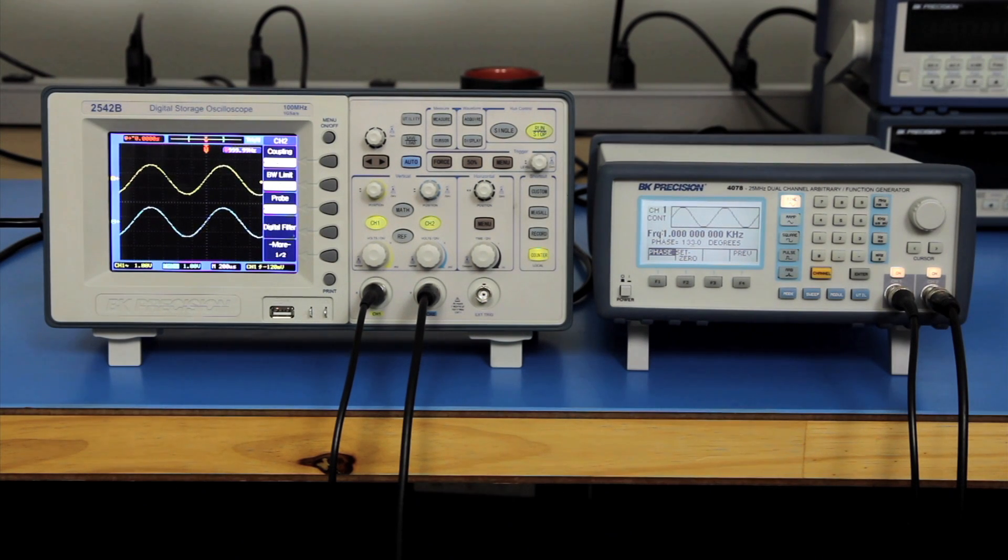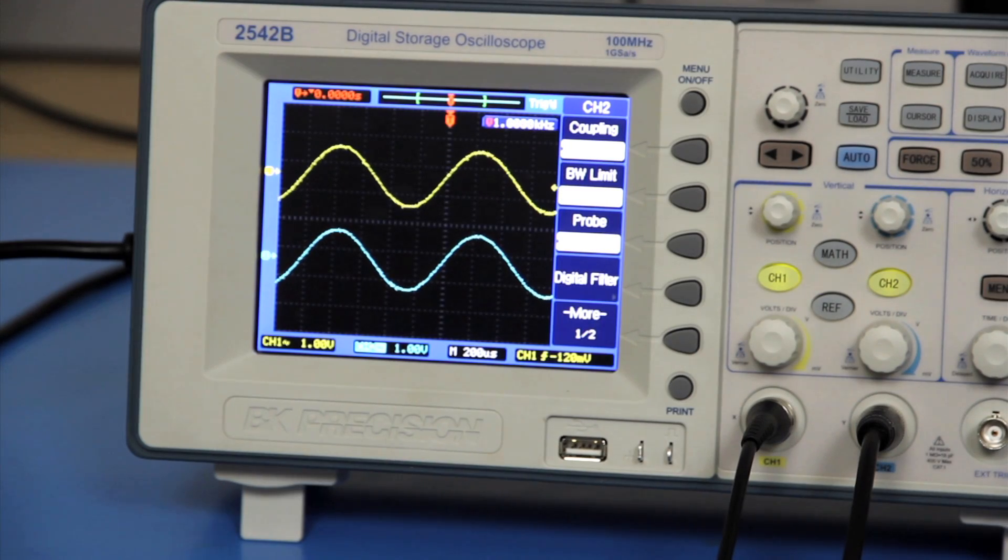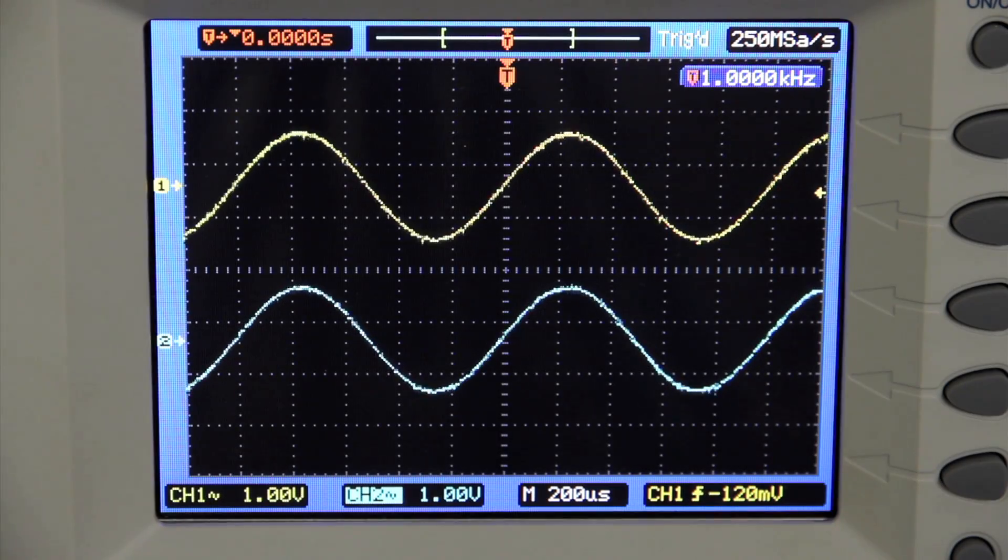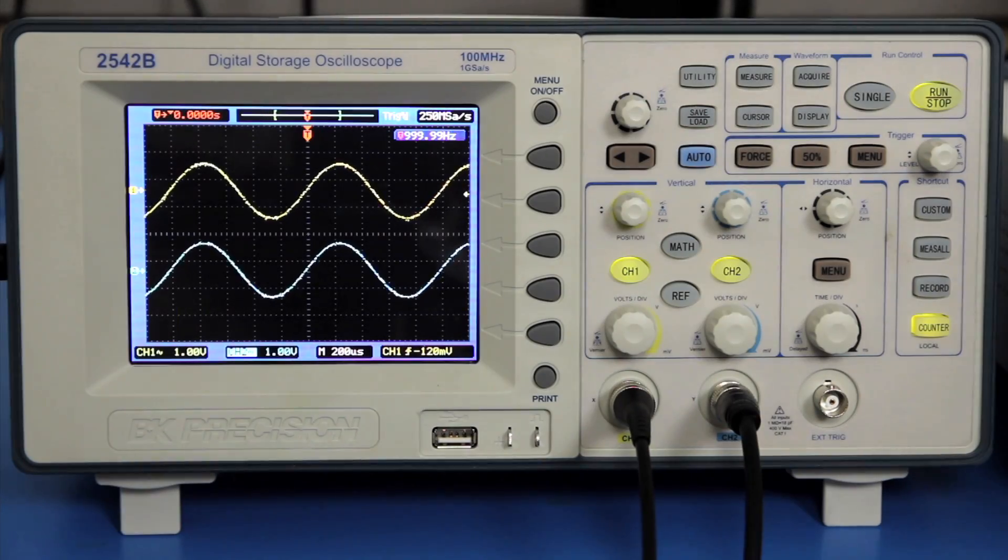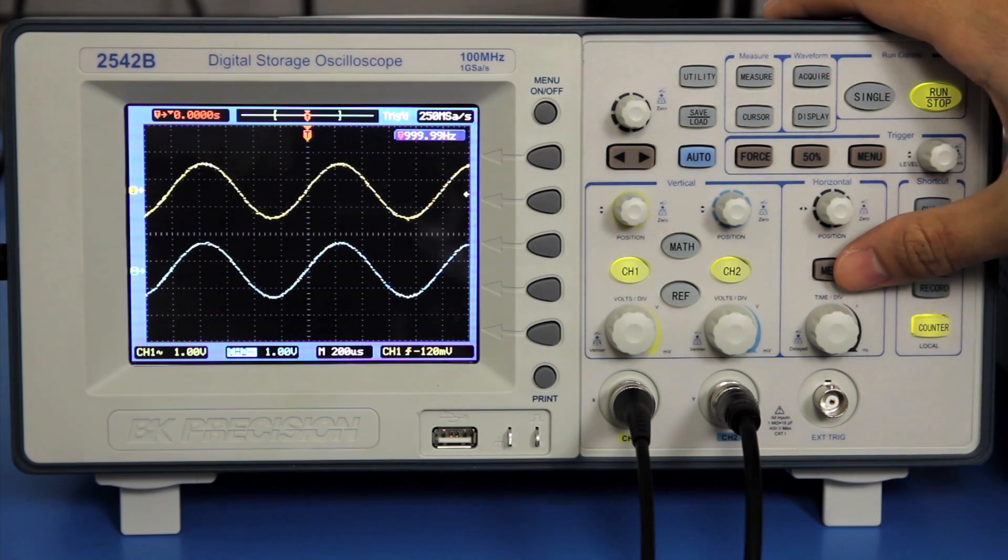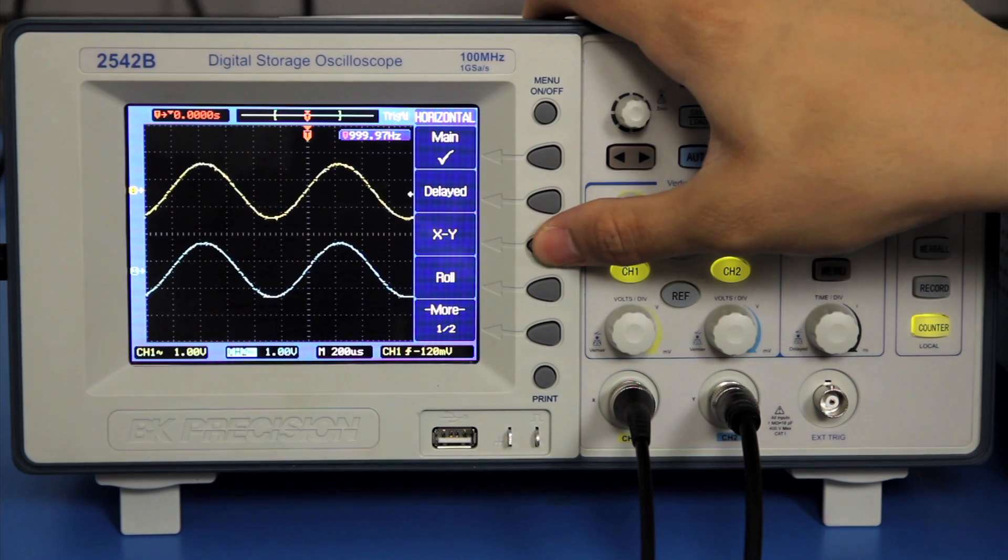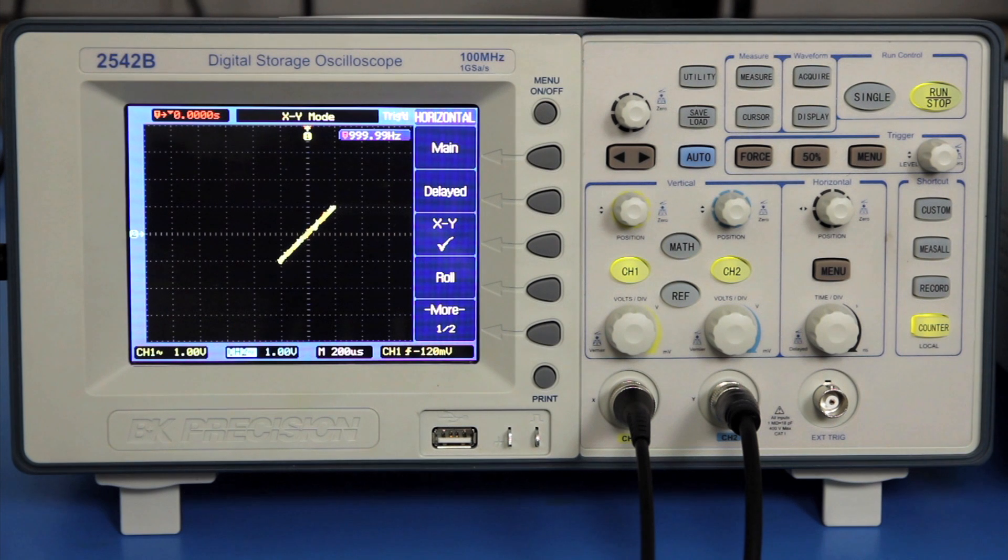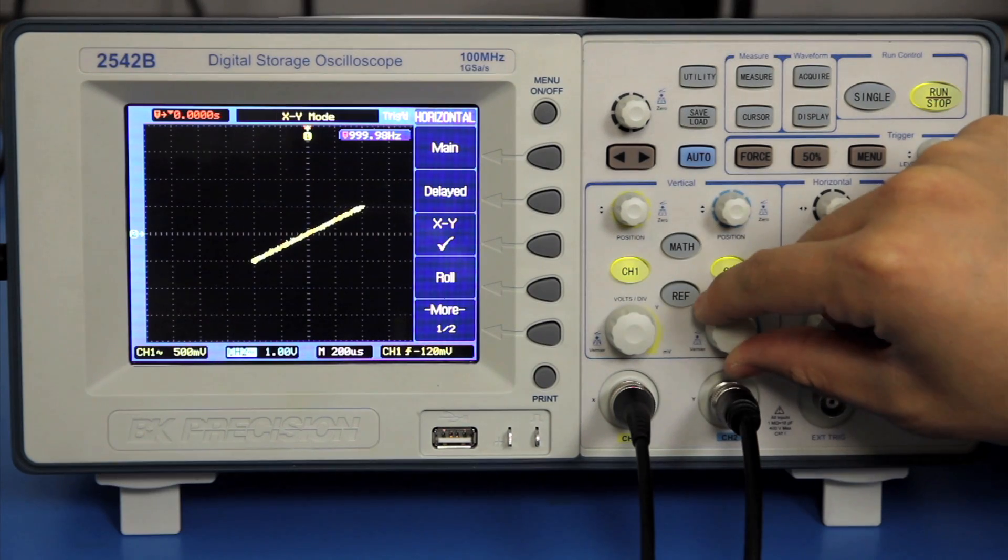I have set up the 4078 to output two sine waves into channel 1 and channel 2 of the 2542B. As you can see currently, both waveforms are in phase. Now I will set the scope to display in XY mode by pressing the horizontal menu button and select XY. You will now see what looks to be a forward slash line in the display, which is actually a Lissajous pattern that signifies the two waveforms are in phase.